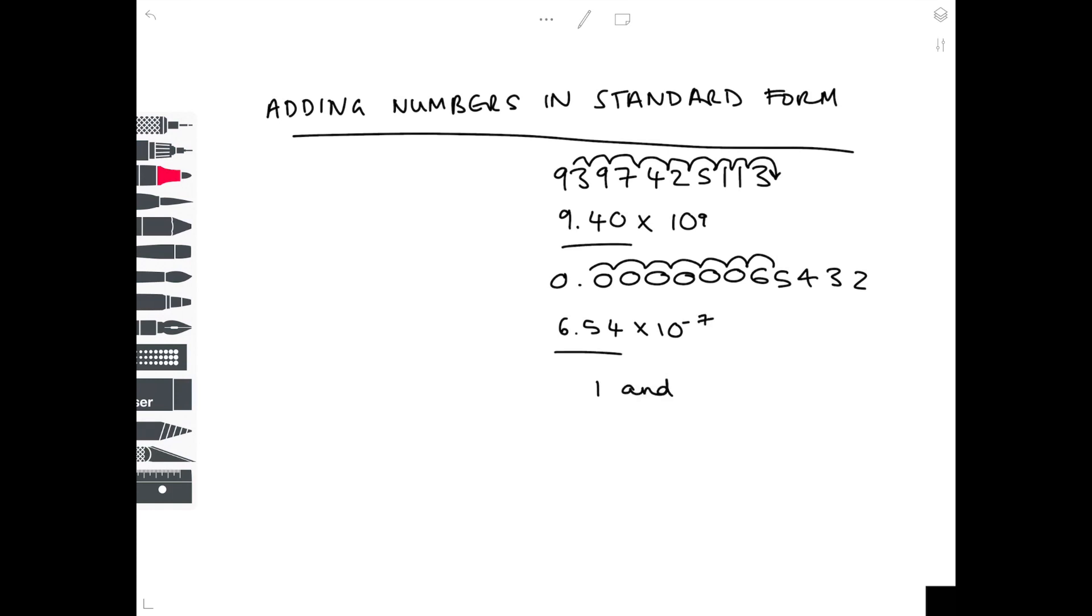Because we now have a very small number, remember that the standard form number needs to be equal or bigger than 1 and less than 10. Hence why 9.40 and 6.54 are absolutely fine.